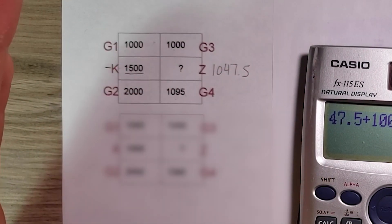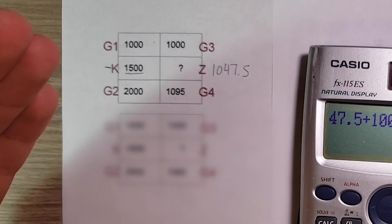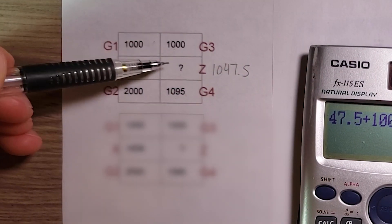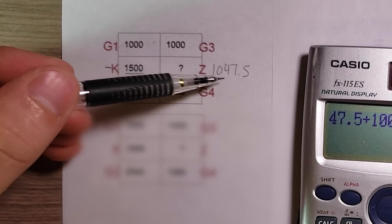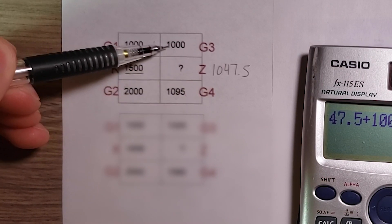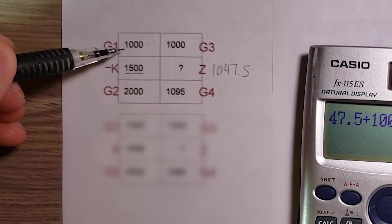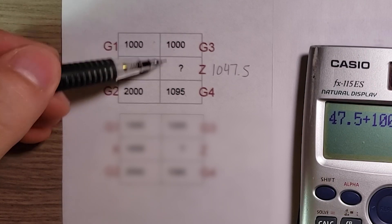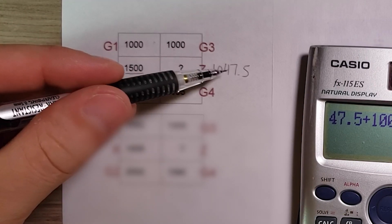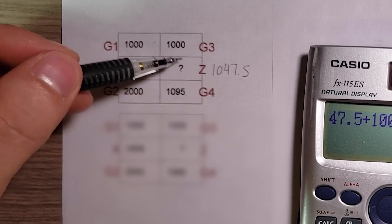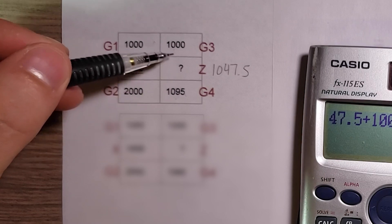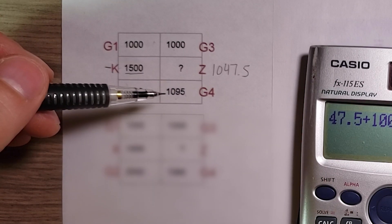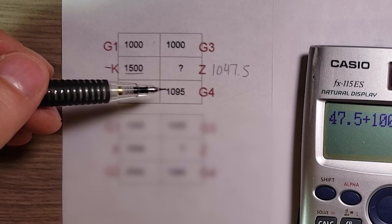One of the best tips for interpolation is after you finish the calculations, look back and see if the answer makes sense. In this case, we know it should be about halfway in between 1,000 and 1,095. 47.5 looks to be about halfway between those two numbers, so even without doing the exact calculations, it sounds right.